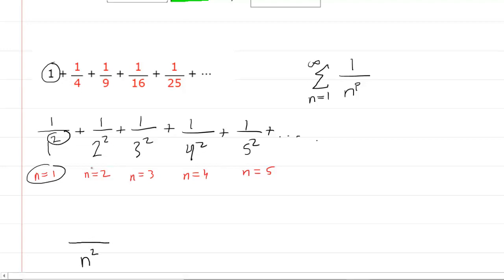You can confirm that by looking at the next term. When n equals 2, we take that value and square it. When n equals 3, we take that value and square it, and so on. No matter what n is, we square it in the denominator. The numerator is always 1.